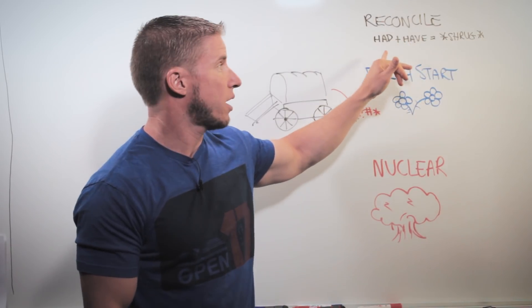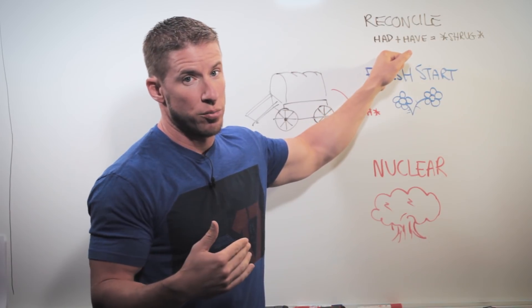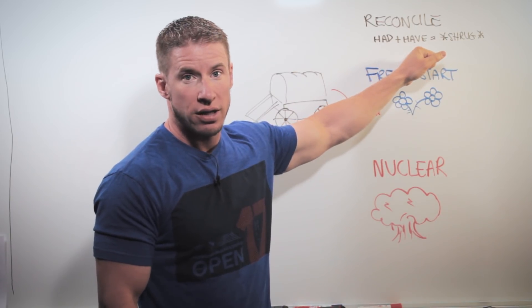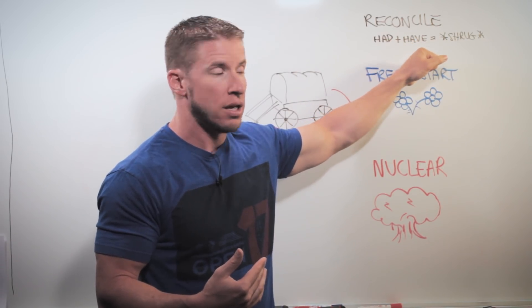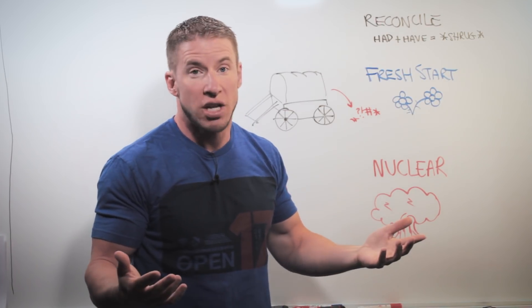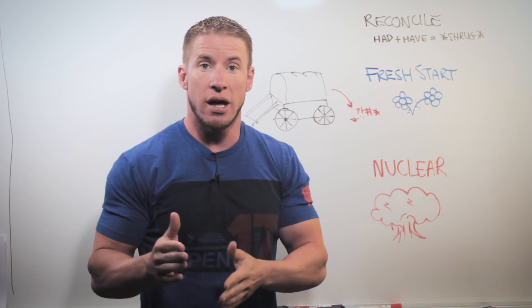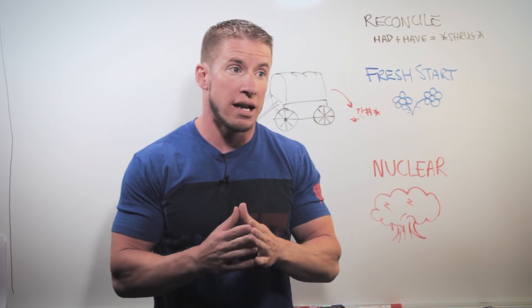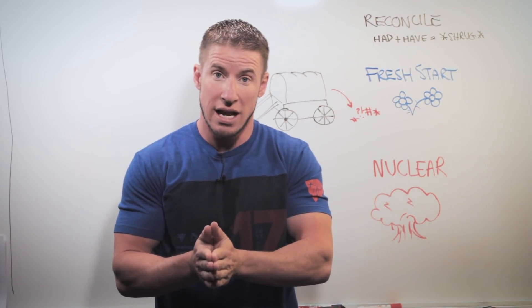Option one: you can do what we call the reconciliation, and that involves what we call the shrug difference. It means at one point in your budget you had recorded what you actually had and it was current, but now it's no longer current. There's a difference between what you had in the budget and what you now have, and you just need to reconcile those two. That difference — that's the shrug difference. There's a difference; what are you going to do with it? Nothing, really. You're just going to make the adjustment, and then from this day forward say: with the money I have on hand right now, what will I do?